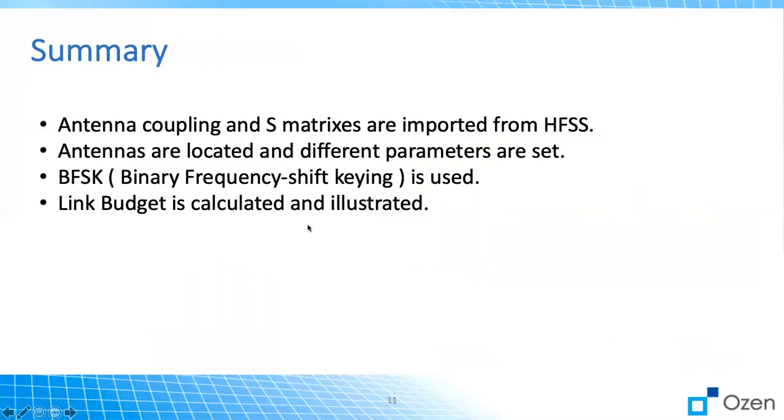So in summary, we imported the antenna coupling as S-matrix, we located the antenna and we set the different parameters. Then we chose BFSK for our modulation, and then the link budget was calculated and we illustrated that. I hope you enjoyed this video and found it useful.